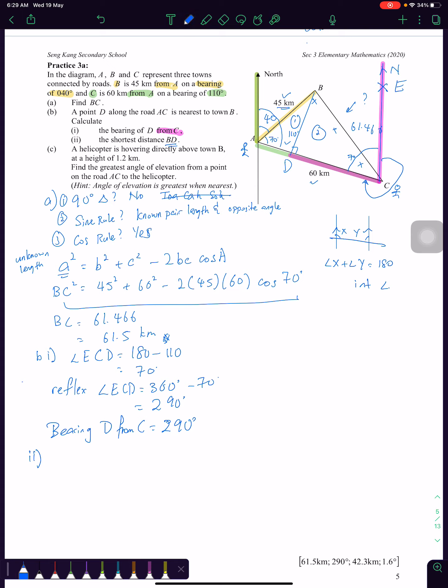So triangle 1, I will write down in triangle ABD. I will try and draw a triangle in the same fashion, orientation. And this is my 90. This is my B, my D, my A. This is my 45, and this is 70. So it's a 90 degree triangle. Straight away, I will use SOH-CAH-TOA.